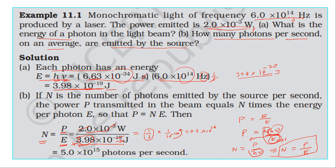Calculating: 2×10⁻³ divided by 3.98×10⁻¹⁹ gives approximately 0.5×10¹⁶, which equals 5×10¹⁵. So the number of photons emitted per second is equal to 5×10¹⁵ photons per second.